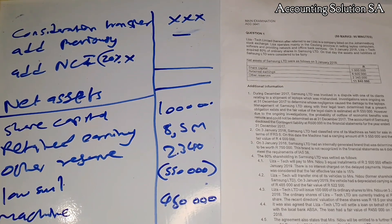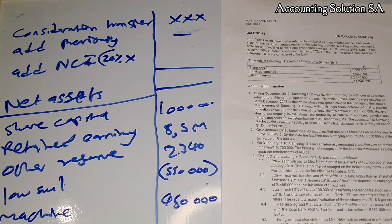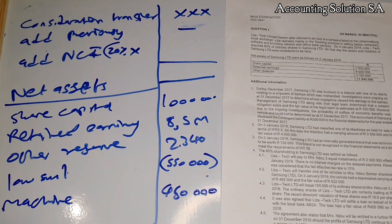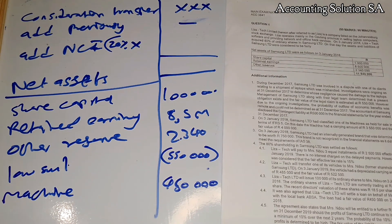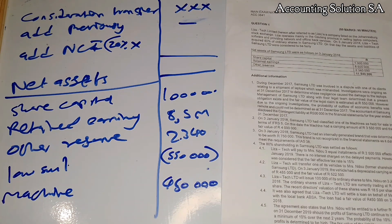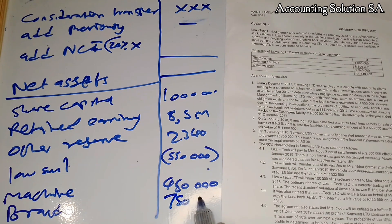Number three: on 3 January 2018, Samsung had an internally generated brand determined to be worth 750,000. This brand was not recognized in the financial statements because it did not meet the requirements of IAS 38. However, under IFRS 3, it doesn't matter whether it has met the requirements of IAS 38 — as long as it is actually generated and we have an amount, we have to recognize it. So we recognize the brand at 750,000.